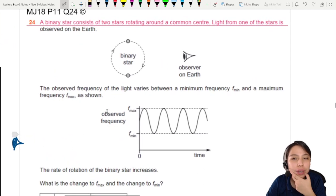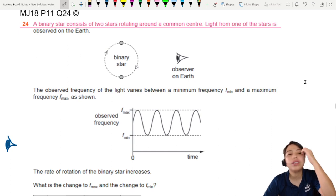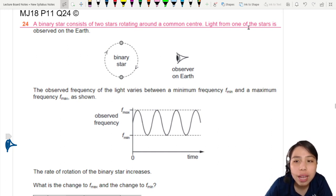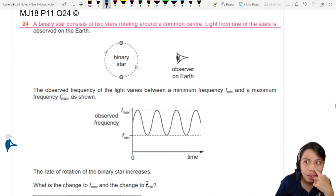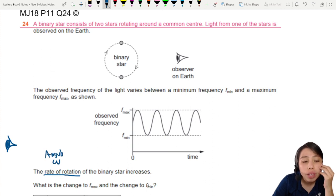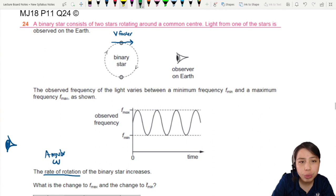This kind of question has appeared before in AS actually. MJ18P11Q24. Binary star, two stars rotating around. Light from one of the stars is observed on Earth. Circular motion, observed frequency varies. You see this fancy graph showing maximum frequency, minimum frequency, maximum frequency, minimum frequency. This is the same star going around and we're watching the frequency. So the rate of rotation of the binary star increases. What is the change to maximum and minimum frequency? We got to slow down. Rate of rotation refers to angular frequency, means it's spinning faster. If the object is coming towards you, it's faster.